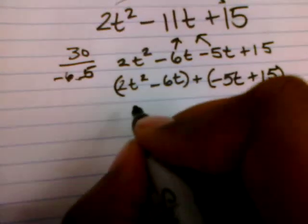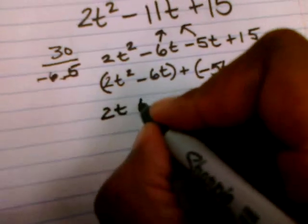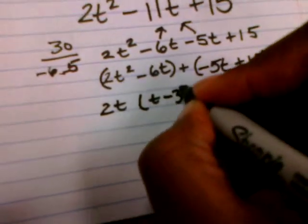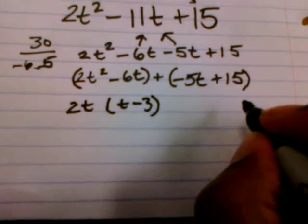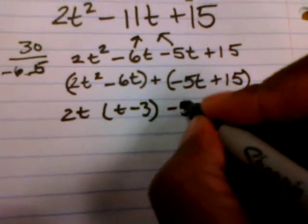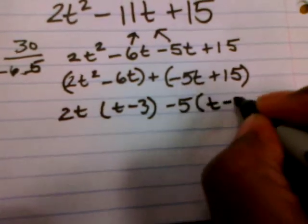Now I'm going to factor out this left-hand side here. They both have a 2t in common. Factoring 2t out. What's going to be left is t minus 3. Now, a negative 5 and 15 have a negative 5 in common. Factor my negative 5 out. I'm going to have t minus 3 remaining.